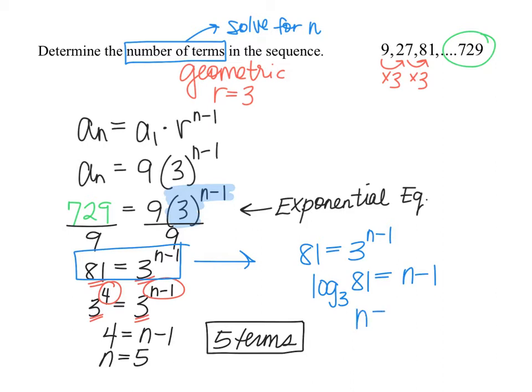This equation written in logarithmic form would be log base 3 of 81 equals n minus 1. So if we added 1, n would equal log base 3 of 81 plus 1. However, log base 3 of 81 ends up being 4, and 4 plus 1 still gives us a final answer of 5. I think it's much more efficient to do it the way we have on the left, but if you didn't realize you could get a common base, you could certainly solve this using logarithms the way we have on the right.